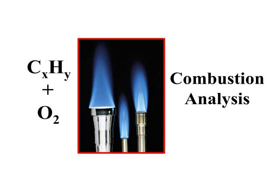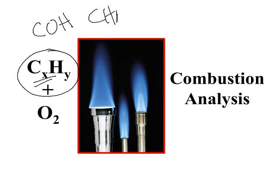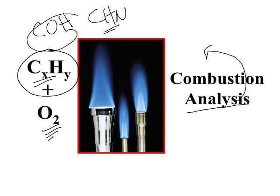Typically, a combustion analysis problem has some kind of a fuel — either a hydrocarbon or a compound that contains carbon, oxygen, hydrogen, or carbon, hydrogen, nitrogen — but it's some kind of fuel that will burn in the presence of oxygen. And when it is burned, you can take the products and do an analysis and work back to the known chemical formula.